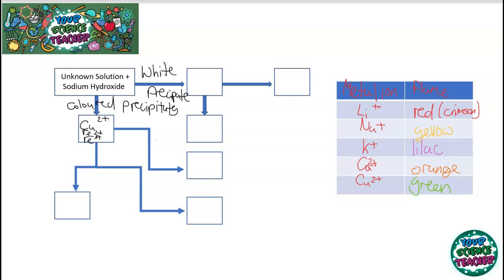But the different colours tell you which one it will be. For example, copper is a light blue precipitate. So that one would be copper. If it was a green precipitate, you know that it would be iron 2 plus. And if it is a brown precipitate, then you know that it is going to be iron 3 plus.